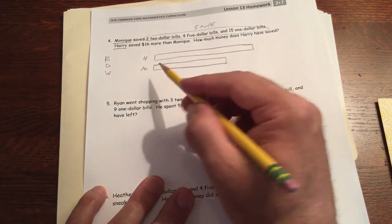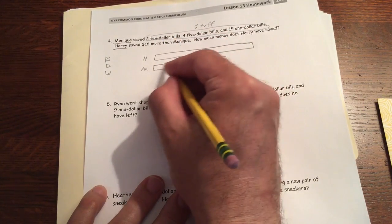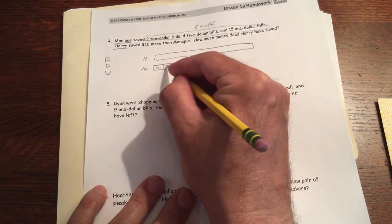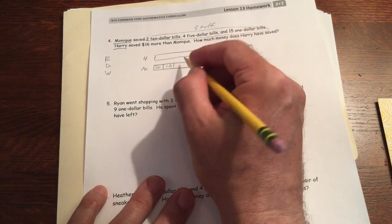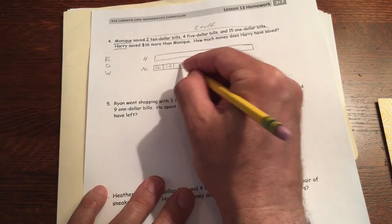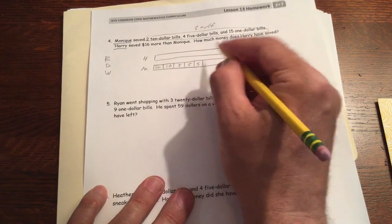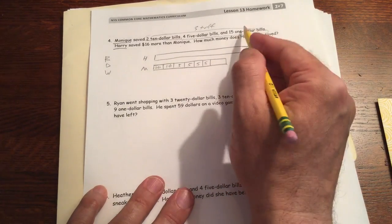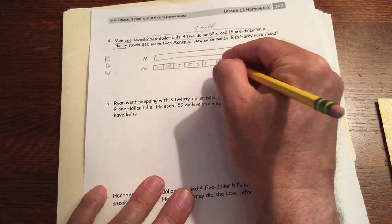So what did Monique save? Two $10s. I'm going to just make them part of her tape here. There's a $10, and there's a $10. Four $5 bills. There's a $1, $2, $3, $4, $5, and $15 ones. I'm not going to draw $15 ones. I'm just going to make this a $15.